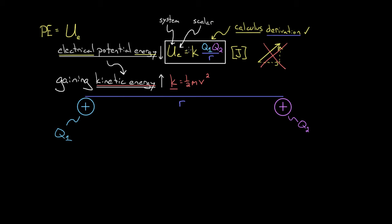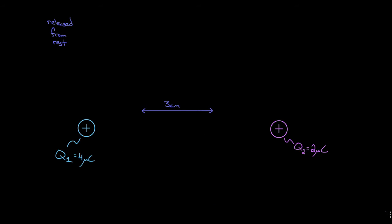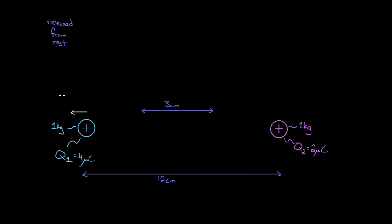So how do you use this formula? What do problems look like? Let's try a sample problem. Let's say we know the values of the charges, and they start from rest separated by a distance of three centimeters. After you release them from rest, you let them fly to a distance 12 centimeters apart. We also need to know the mass of each charge — let's say each charge is one kilogram, just to make the numbers come out nice. The question we want to know is: how fast are these charges going to be moving once they've made it 12 centimeters away from each other? Q1 is going to be speeding to the left, Q2 to the right. To figure this out, we're going to use conservation of energy.